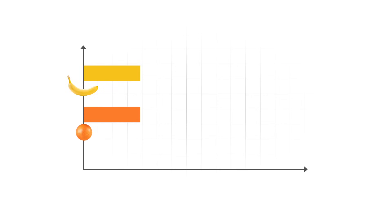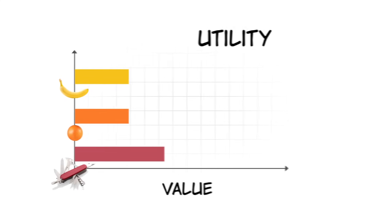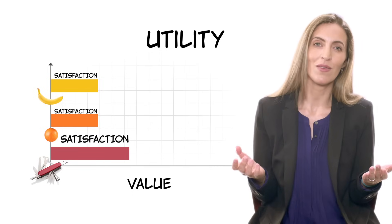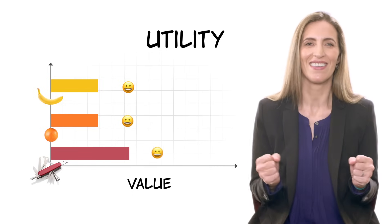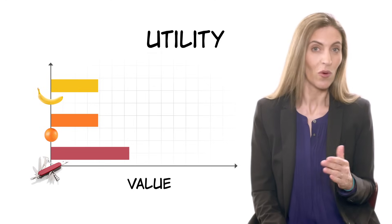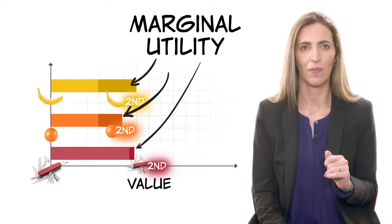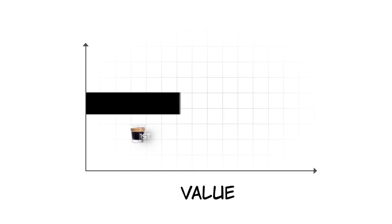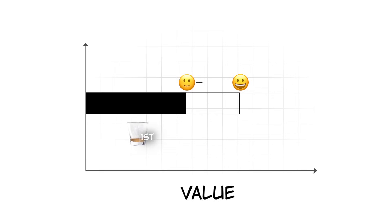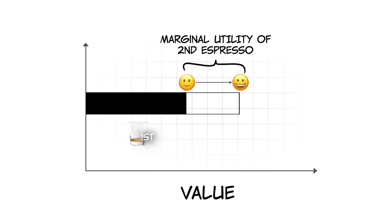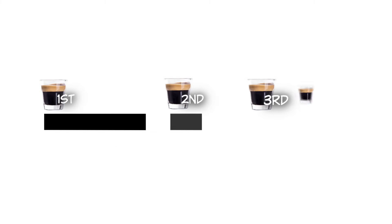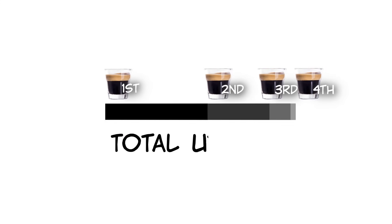Each good we decide to buy provides us with some value. Economists call this utility, and you may think of it as satisfaction or happiness. The increase in value or satisfaction from buying an additional good is its marginal utility. How much more do you enjoy two espressos compared to one? That difference is your marginal utility. If you add up the marginal utilities of each espresso, you get your total utility.